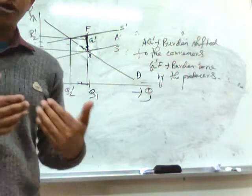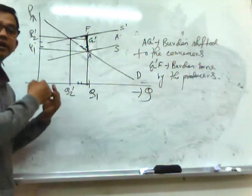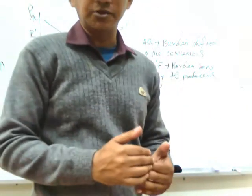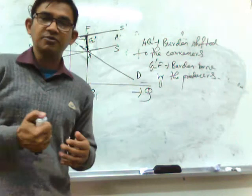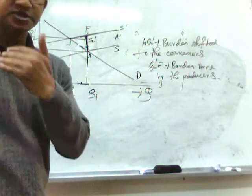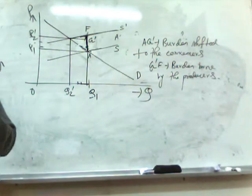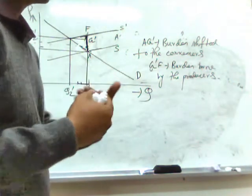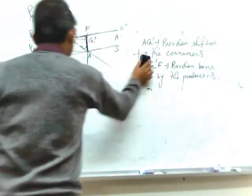All these examples were for when the producer is being taxed. Now we will consider the case when the consumers are being taxed. We will equally find that higher the price elasticity of demand, higher will be the share of burden that consumers can transfer towards producers, and higher the price elasticity of supply, lower will be the share of burden that consumers can transfer towards producers.